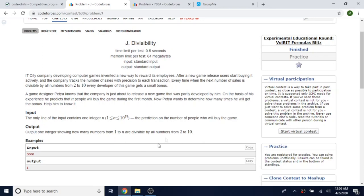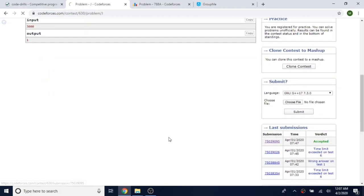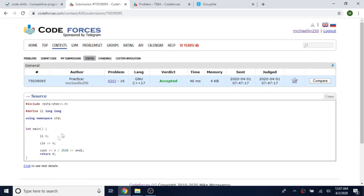All right guys, so this is the problem statement J Divisibility. And for what did I do for my submission? I just read in n and then did cout n over 2520. So yeah, that's it.